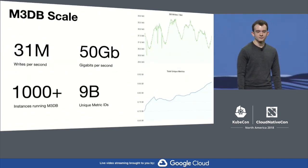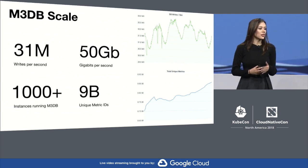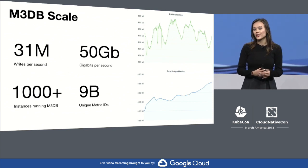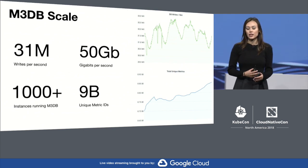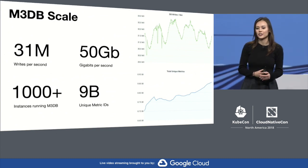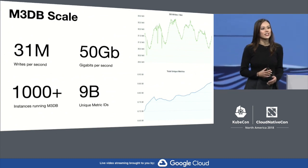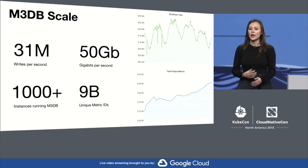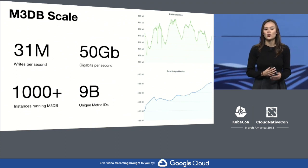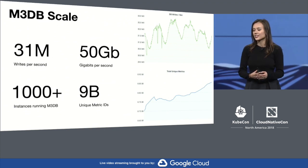To give you a sense of M3DB's usage at Uber: M3DB writes 31 million metrics at 50 gigabits per second across all of our data centers. Uber has over a thousand instances running M3DB placed in various clusters, and in total we store almost 9 billion unique metric IDs.